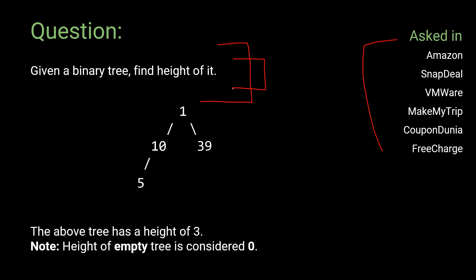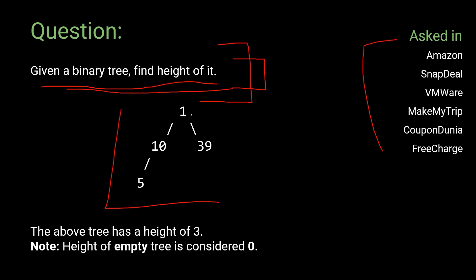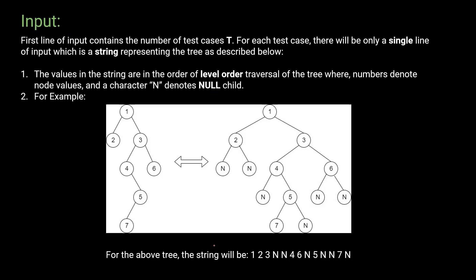In this question we are given a binary tree and we have to find the height of it. For example, given this binary tree, the height would be 1, 2, and 3 — so 3 would be the height of this tree.